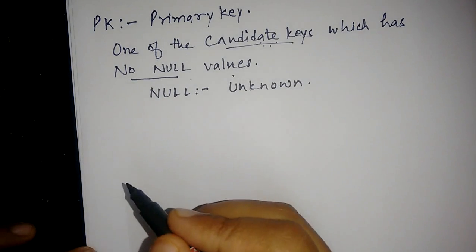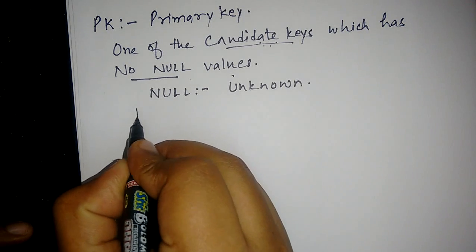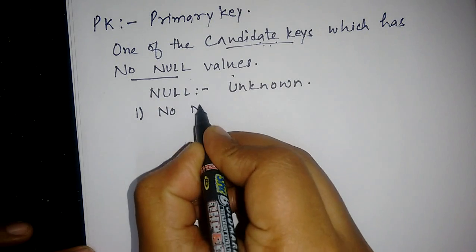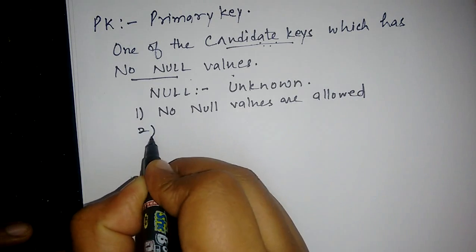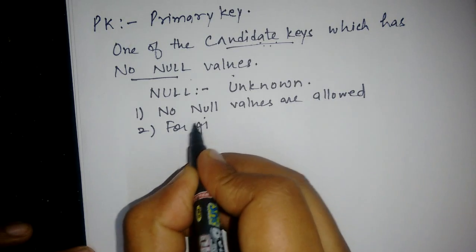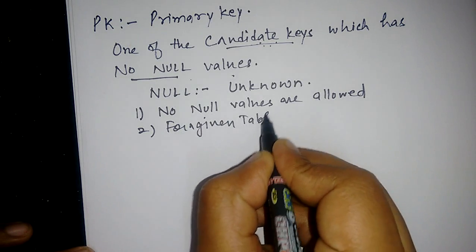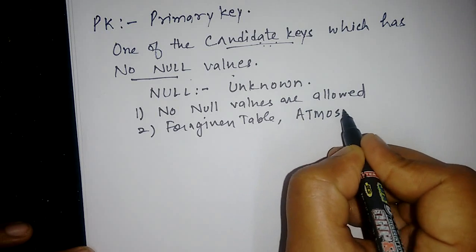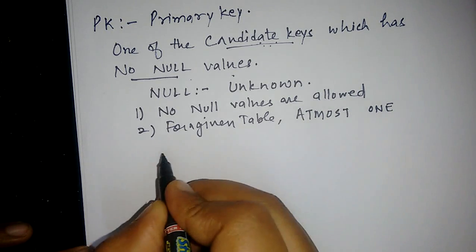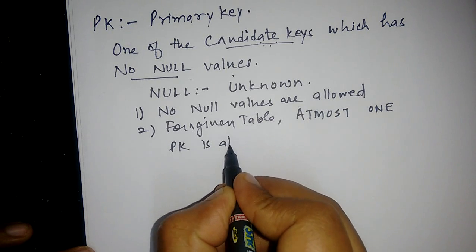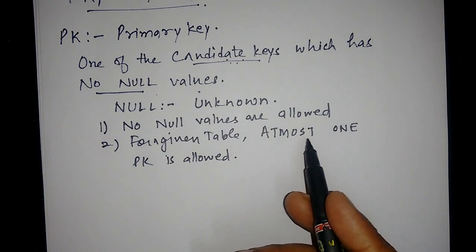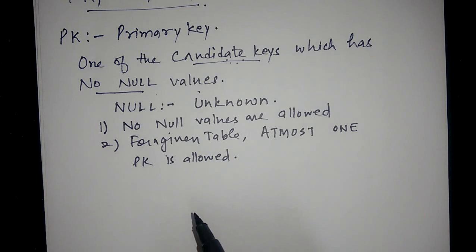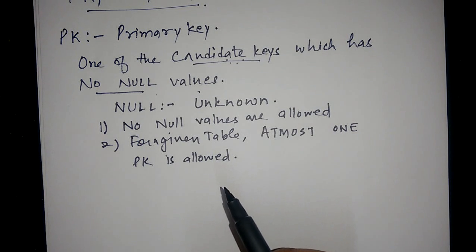As per the rules, there are two rules for primary keys to be followed. First, no null values are allowed. Second, for a given table, at most one primary key is allowed. That means for a given table, only one primary key is allowed. There can be no table which has more than one primary key.